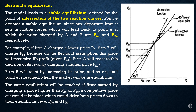Firm A's equilibrium price is P-A-E, and firm B's equilibrium price is P-B-E, corresponding to point E on the x-axis and y-axis respectively. This equilibrium is stable — both firms will return to these two equilibrium price levels if they deviate from them.